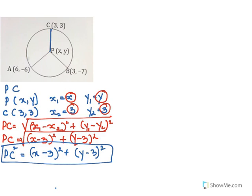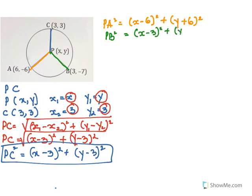Now we have found all three. To summarize: PA² = (x - 6)² + (y + 6)², PB² = (x - 3)² + (y + 7)², and PC² = (x - 3)² + (y - 3)².